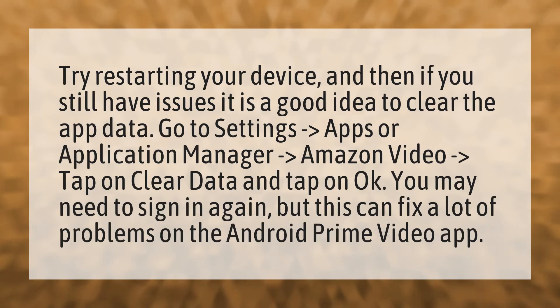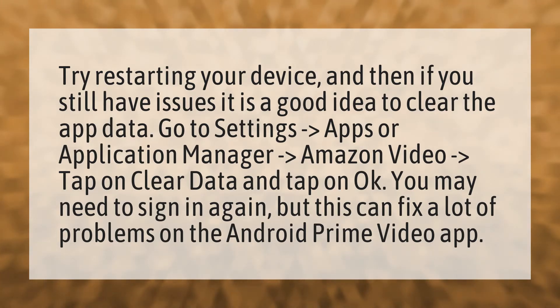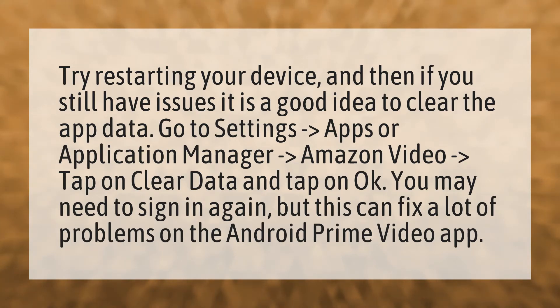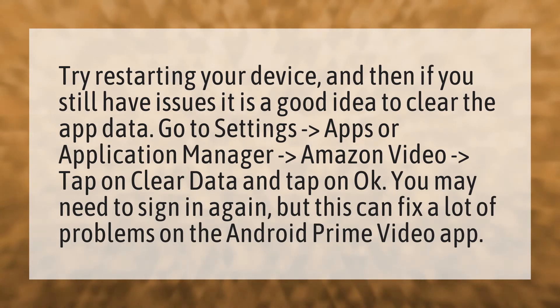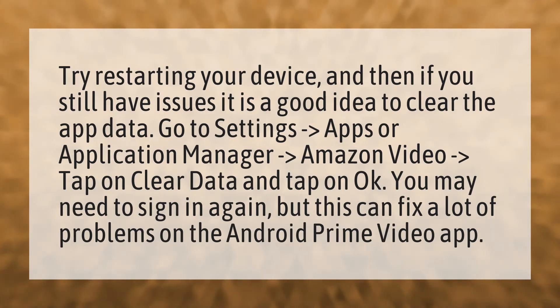clear the app data. Go to Settings, then Apps or Application Manager, then Amazon Video, and tap on Clear Data and tap OK. You may need to sign in again, but this can fix a lot of problems on the Android Prime Video app.